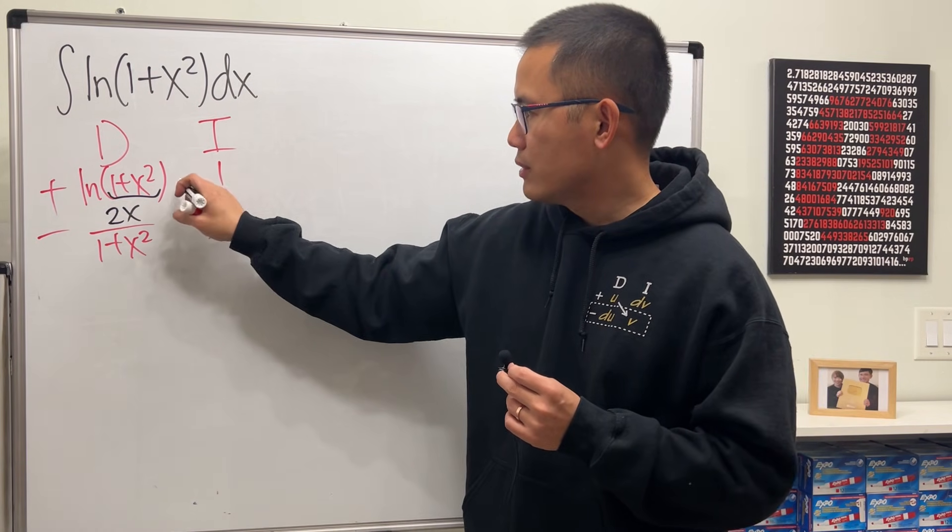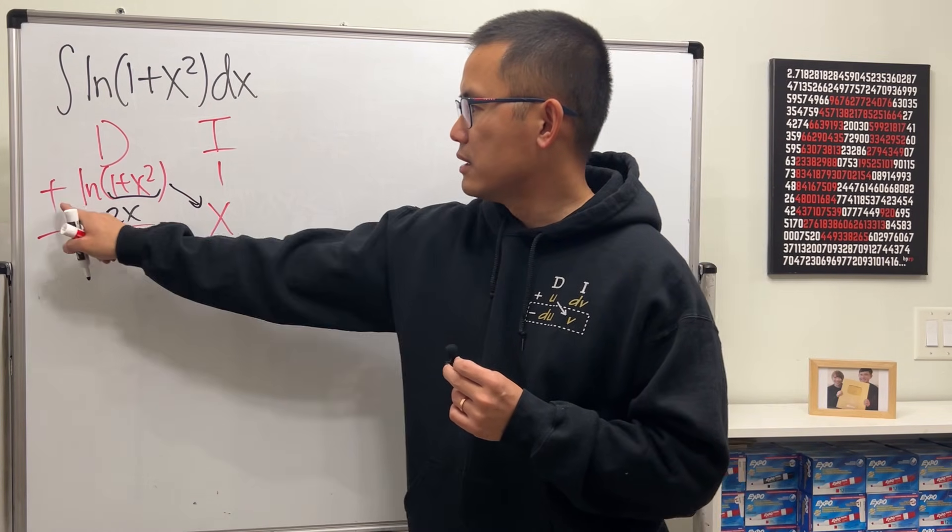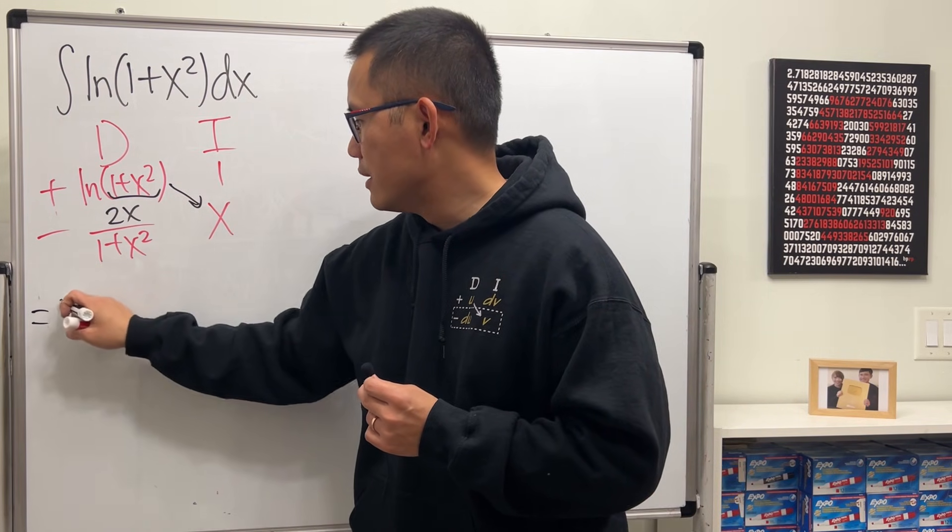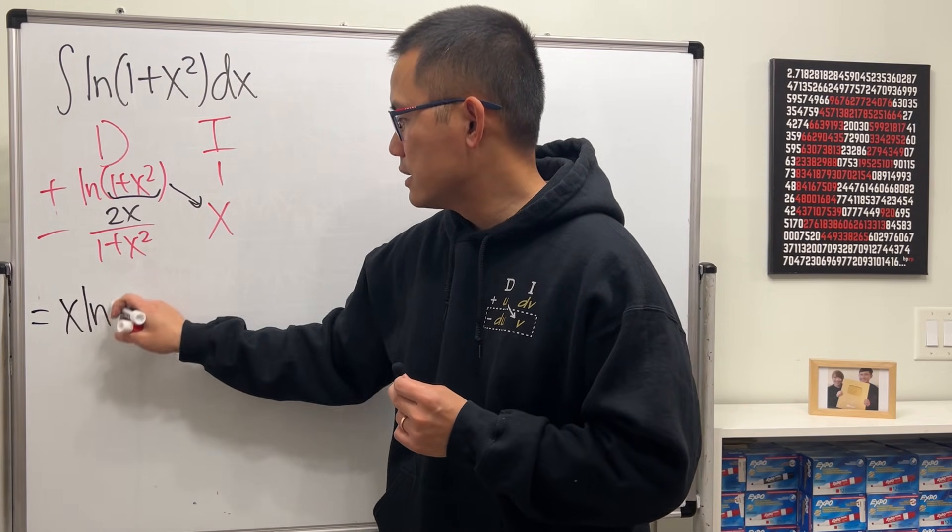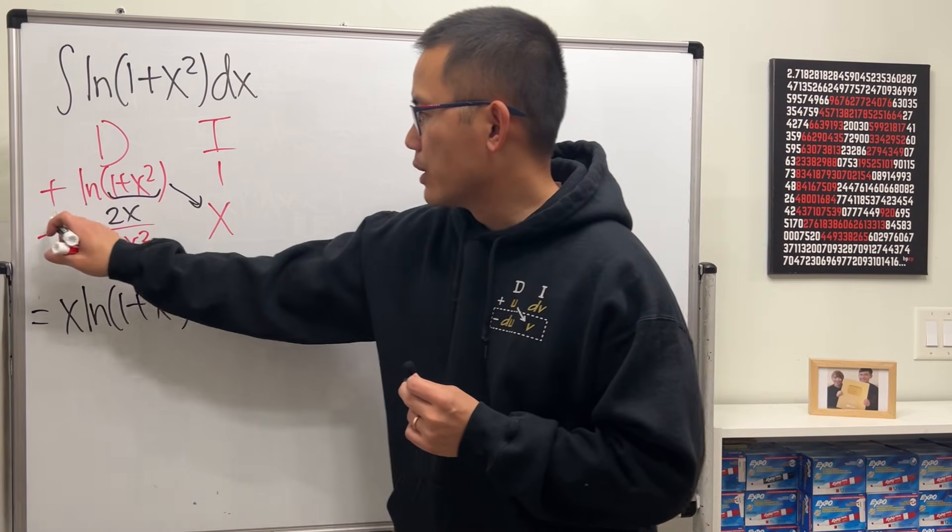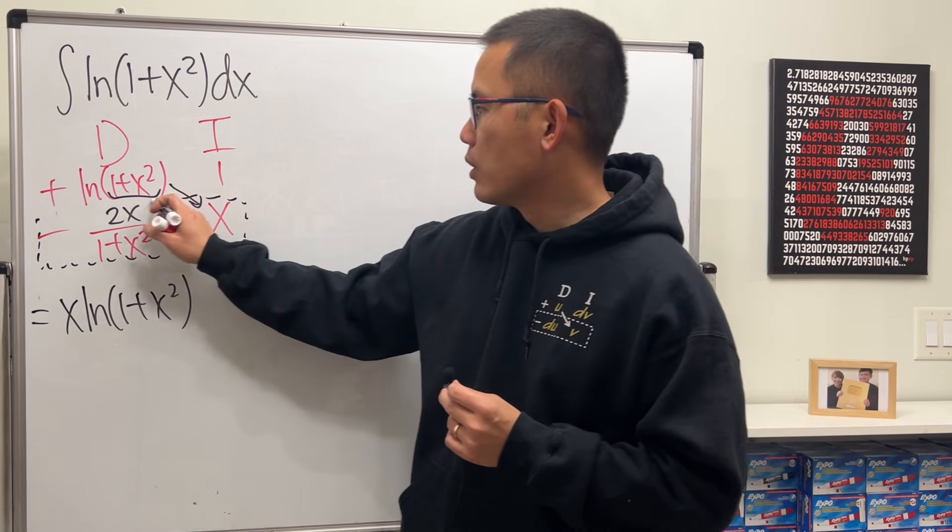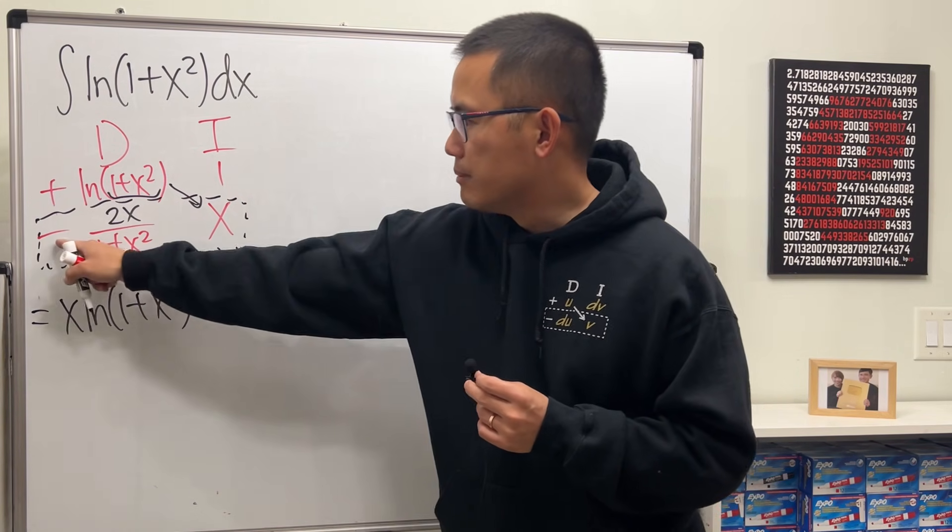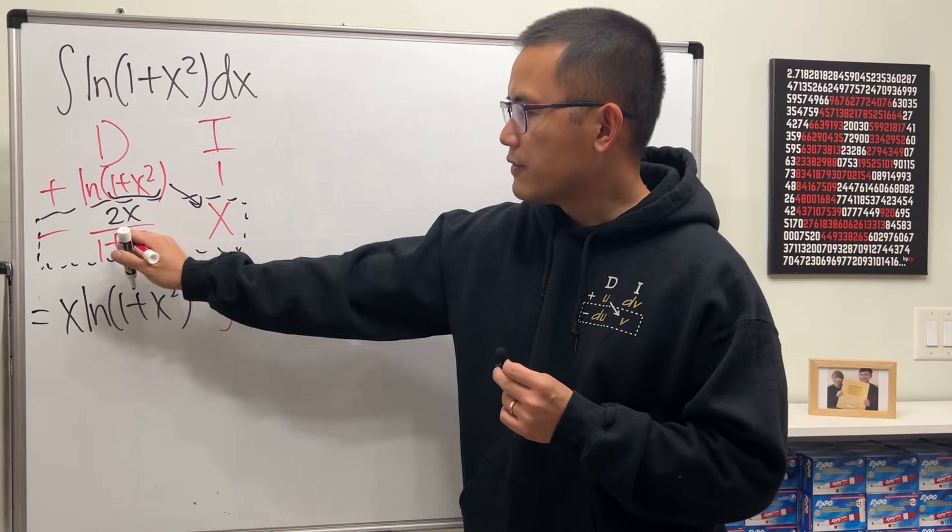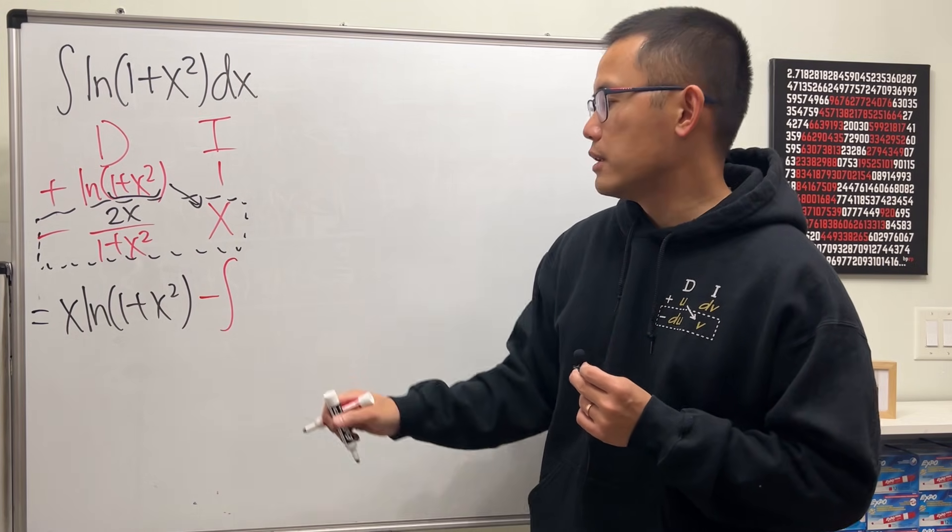Now, this diagonal, that's the first part of the answer. Positive this times that, so we will have, let's write down the x first, and then we have this. And then, we are going to multiply this row, and then it's a minus. And a product of a row, you still have to put that inside of an integral like this.